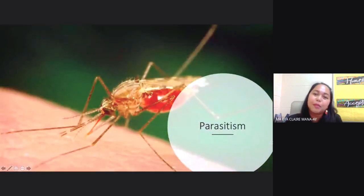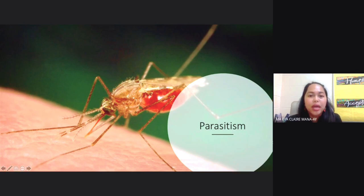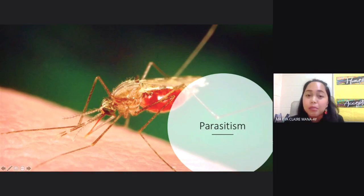The third type of symbiotic relationship is parasitism. In this type of relationship, one organism benefits while the other is harmed. We call the organism which gets benefits the parasite, while the other one which is harmed, we call that the host. In this example, we have a human arm and, of course, a mosquito as your parasite.